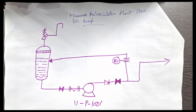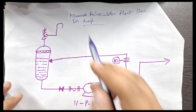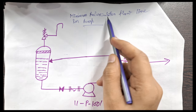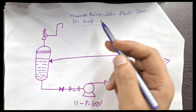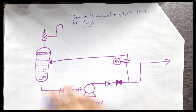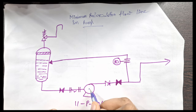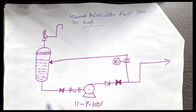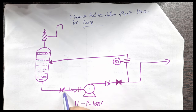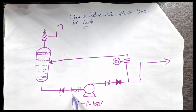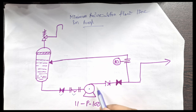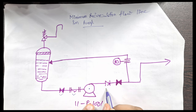In this video we are going to discuss about the minimum circulation flow line in a pump. This is a centrifugal pump, and in the suction line of the centrifugal pump there is the suction valve, then a strainer, and then the pump. In the discharge line there is an NRV and then a valve.